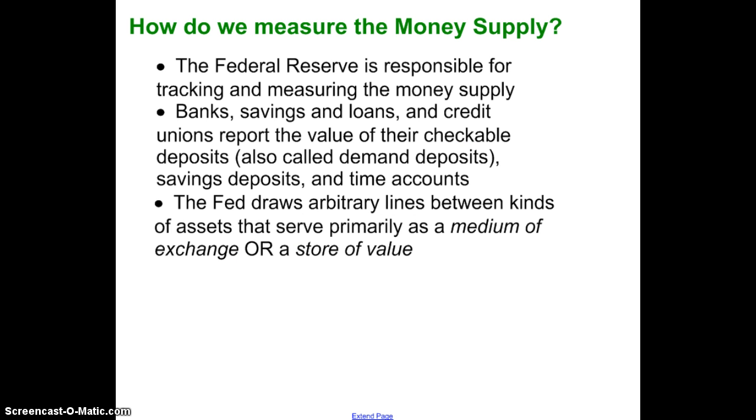So we know what money is. How do we actually measure money or track money? This gets a little bit complicated because our money supply isn't just dollars and coins. It's actually much broader than that. The Federal Reserve is responsible for tracking and measuring the money supply. Banks, savings and loans, and credit unions, all types of financial institutions, report the value of their deposits to the Fed. It is broken down into checkable deposits, the money that's in checking accounts, which is also called demand deposits. You want to be able to use those two terms interchangeably, checkable deposits or demand deposits. They also report what's in savings accounts and what's in what's called time accounts, like a certificate of deposit where you might put money in a one-year CD.